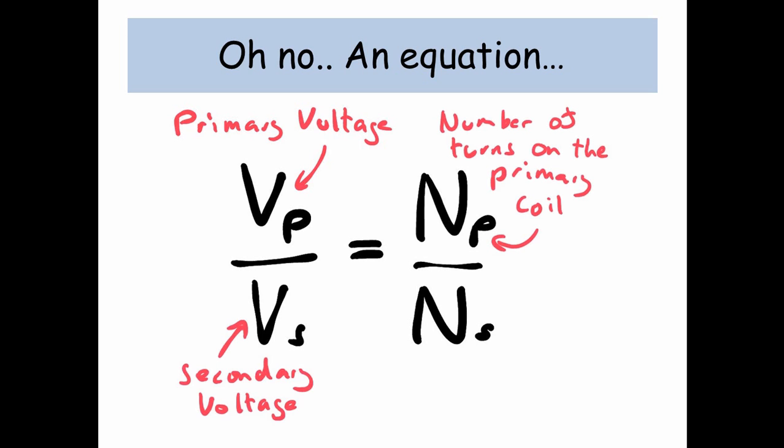NP is the number of turns on the primary coil, and NS is the number of turns on the secondary coil.